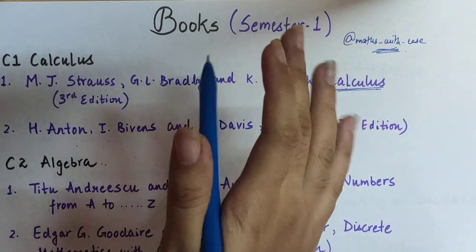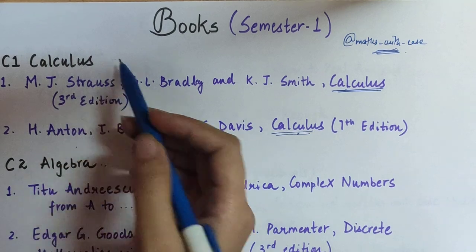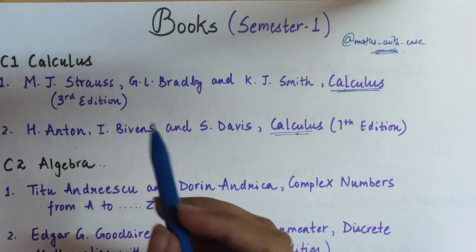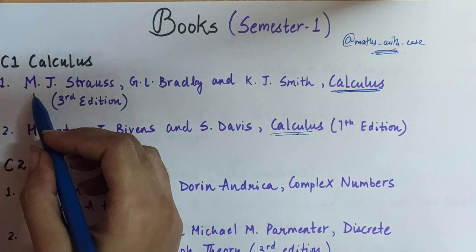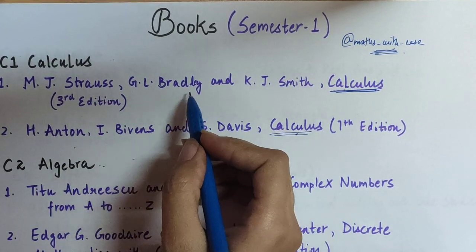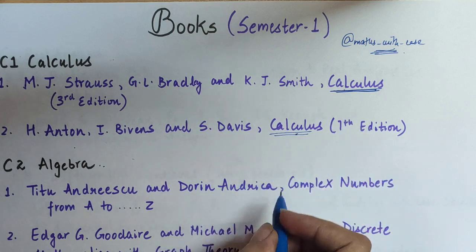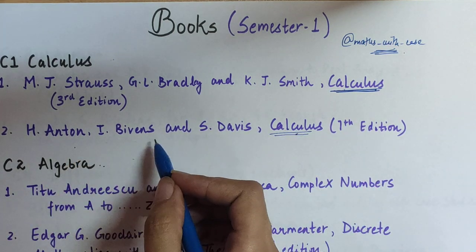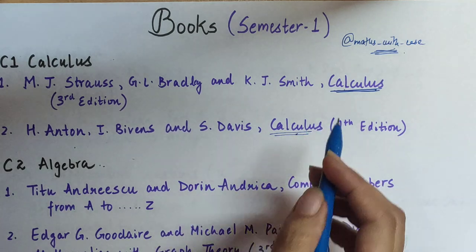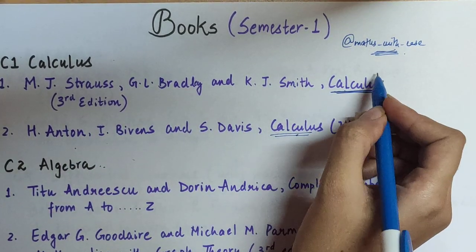Now for semester one we have two subjects: Calculus and Algebra. For Calculus we have two books. The first book is Calculus by M.J. Strauss, G.L. Bradley, and K.J. Smith. And the second book is Calculus by H. Anton, I. Bivens, and S. Davis.